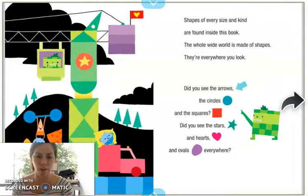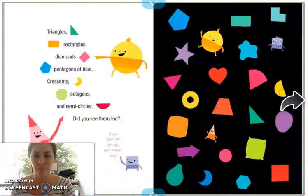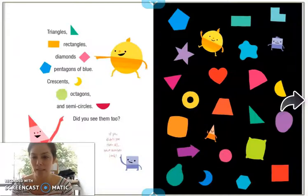Did you see the stars and hearts and ovals everywhere? Triangles, rectangles, diamonds, pentagons of blue? Crescents, octagons, and semi-circles. Did you see them too?